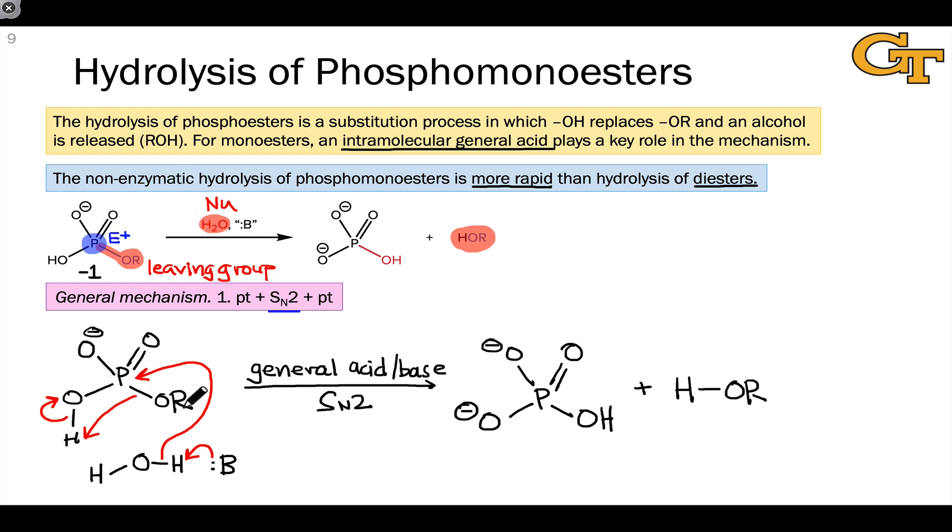And as far as rate acceleration is concerned, it's really this intramolecular general acid that we see right here that makes phosphomonoesters much more susceptible to hydrolysis than diesters. You can think of this as one of the driving forces behind the polymerization of nucleic acids. Polymerization results in stabilization, since the diester form with an O-R group here is less susceptible to hydrolysis than the monoester form.